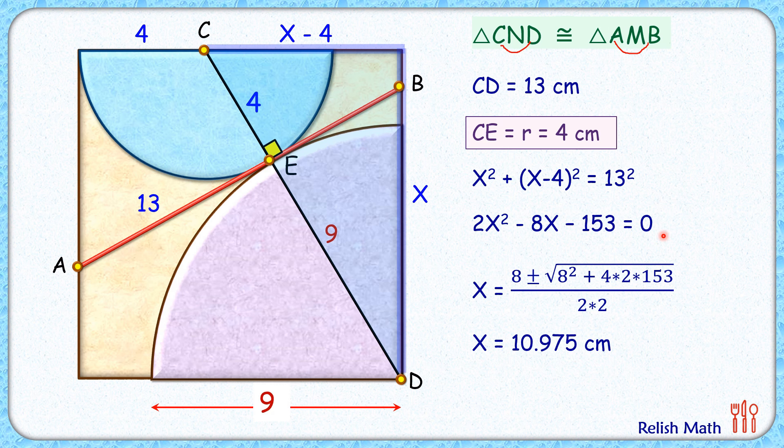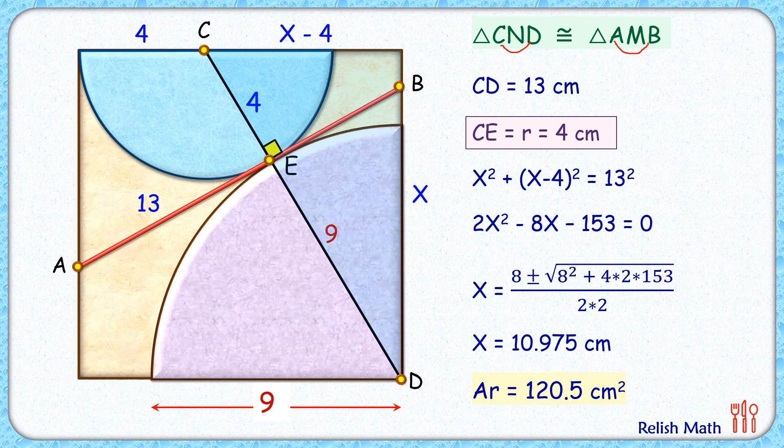Ignoring the negative value, we'll get the value of x as around 10.975 centimeters. Solving it to get the area of the square as 120.5 centimeters squared, and that's our answer. I hope you enjoyed the solution. I will see you in the next video. Till then, tata bye bye.